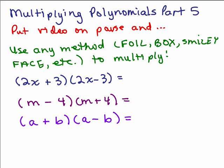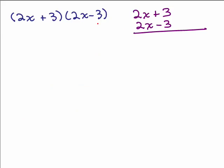Okay, let's go to the first one: (2x + 3)(2x - 3), and let's use the vertical format. 2x times 2x is 4x². 2x times 3 is plus 6x, and -3 times 2x is -6x.